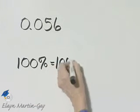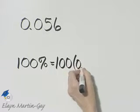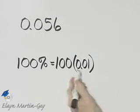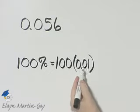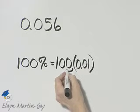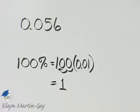So I'll write down the 100, and then instead of the percent symbol, I'll write down its meaning. And then how do I multiply these two numbers? Multiplying by this number has the effect here of moving the decimal point two places to the left, so that product is 1.